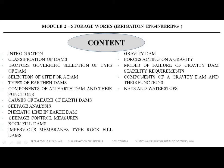In seepage control measures, there are two types of measures: embankment seepage control and foundation seepage control. In embankment seepage control measures, there will be a provision of a toe filter, horizontal drainage filter, protective filter, downstream of the toe, downstream coarse section, and chimney drain. In foundation seepage control measures: impervious cutoff, upstream impervious blanket, downstream seepage berms, drainage trenches, and relief wells. These all are the seepage control measures.